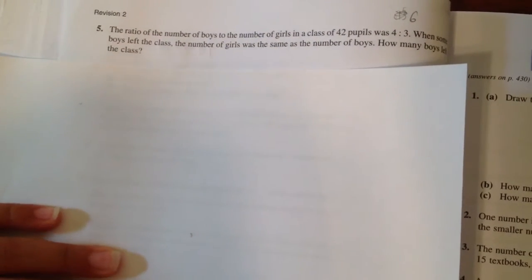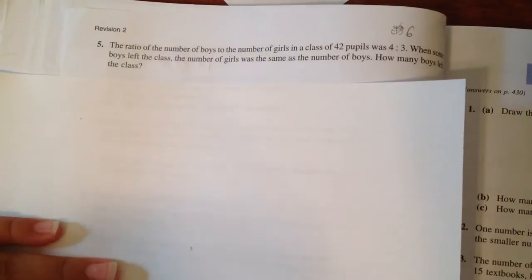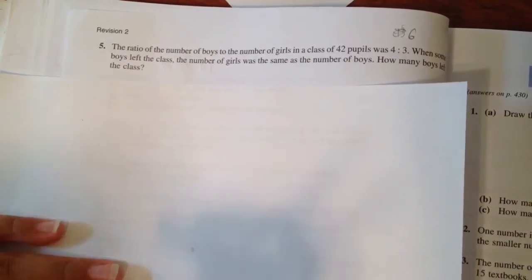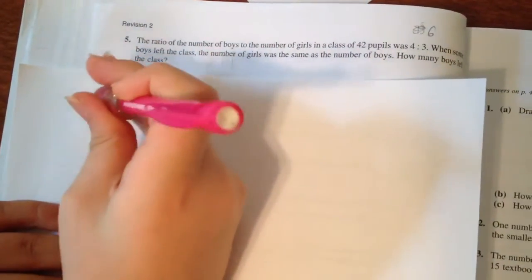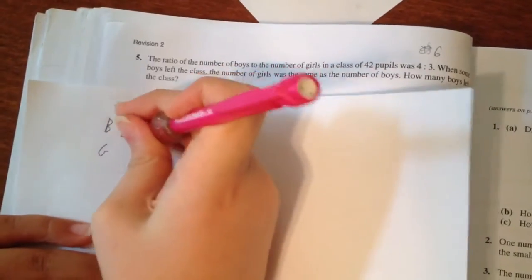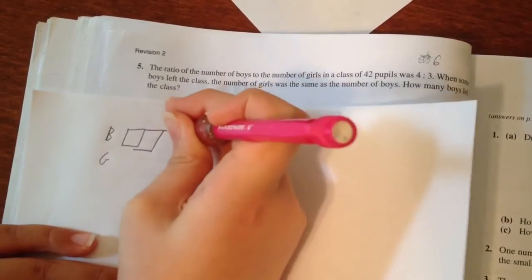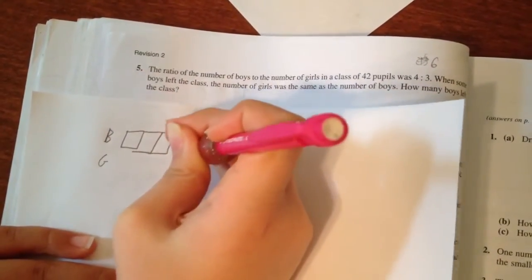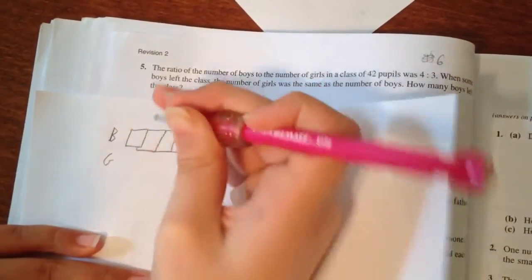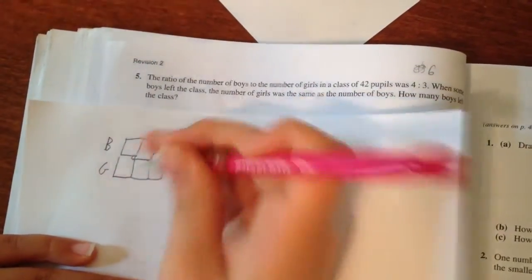We know the ratio of the number of boys to the number of girls in a class of 42 pupils was 4 to 3. I want to draw a bar to explain this. The number of boys is B and the girls is G. There's a 4 to 3 ratio, so 4 bars for boys and 3 bars for girls.